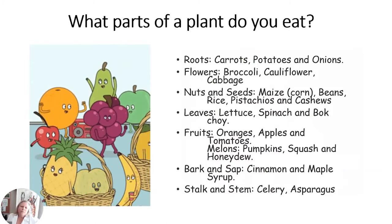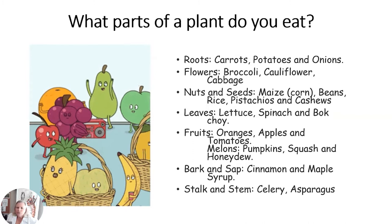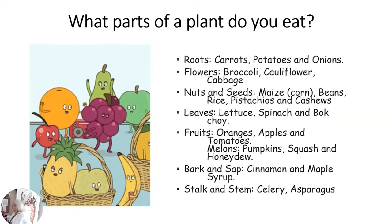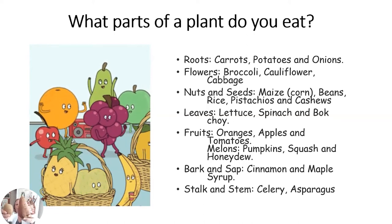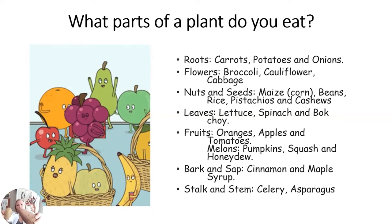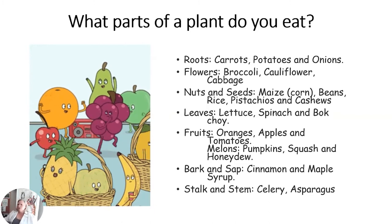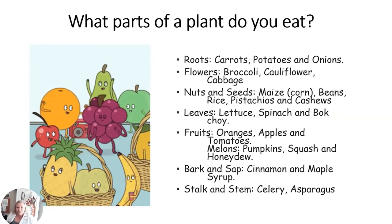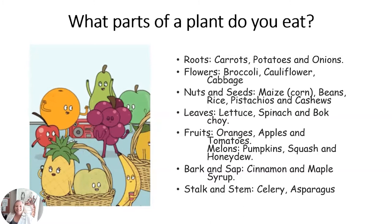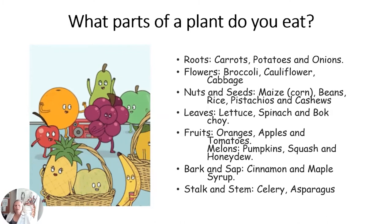We eat lots of different parts of plants. We eat roots — things like sweet potatoes and regular potatoes, which are down in the ground and harvested from the ground. We also eat flowers — broccoli, cauliflower, and cabbage are all the flowering head. We have to eat them before the flowers bloom, because once they bloom they become too bitter.